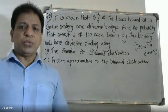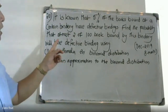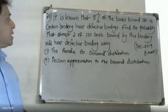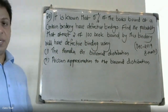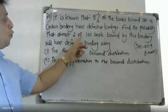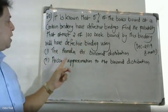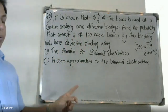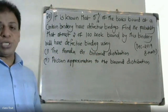Good morning students. It is known that five percent of the books bound at a certain bindery have defective binding. Find the probability that at most two of one hundred books bound by this bindery will have defective binding. We will use the formula for binomial distribution.